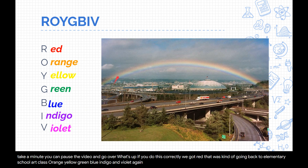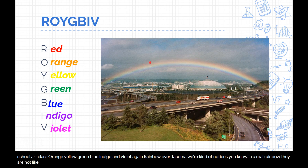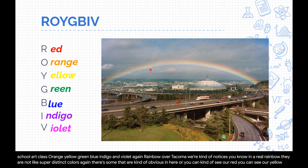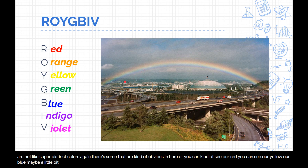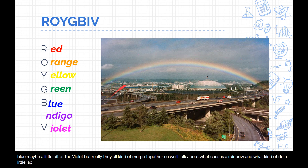Here's a cool picture of a rainbow over Tacoma. What we notice is that in a real rainbow, the colors are not super distinct — they kind of merge together. You can see red, yellow, blue, maybe a little violet, but they all blend. We'll talk about what causes a rainbow and do a little lab creating our own rainbows later in the week.